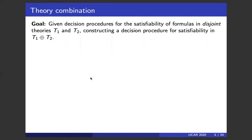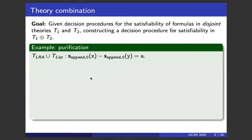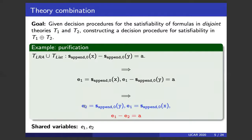More formally, the goal of theory combination is: given decision procedures for satisfiability of formulas in theories T1 and T2, construct a decision procedure for satisfiability in the union T1 ∪ T2. To do this, we first perform purification. Given our example formula, we introduce new variable e1 to represent s-append-0(x), then e2 for the second term. The blue part is purely from the theory of list, and the red part is purely from linear real arithmetic. We decompose the formula into two pure-theory parts.